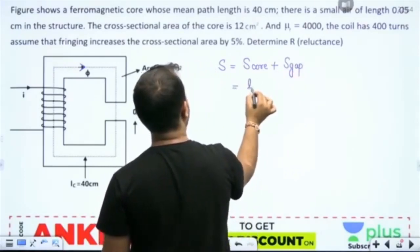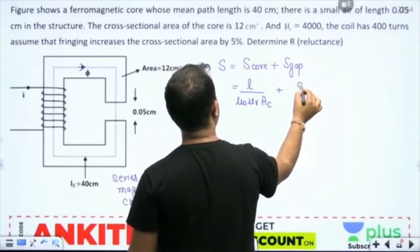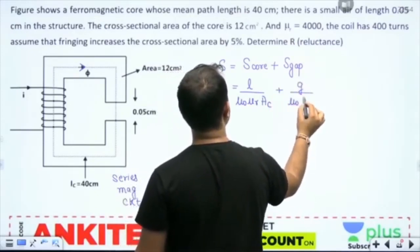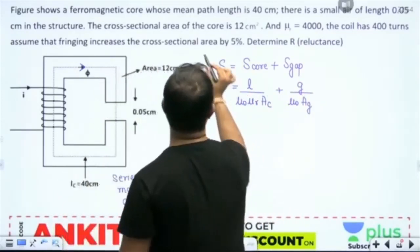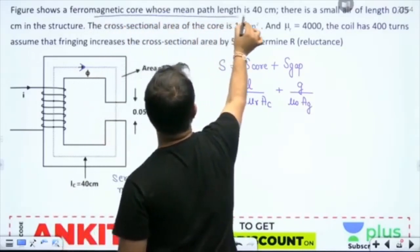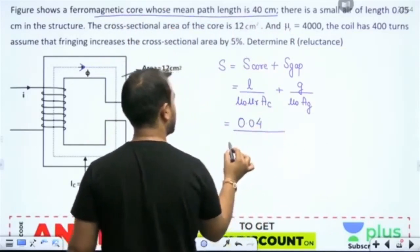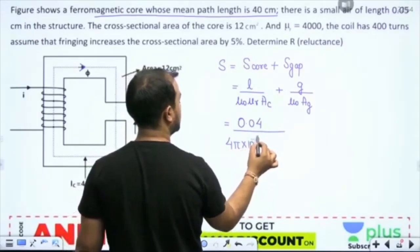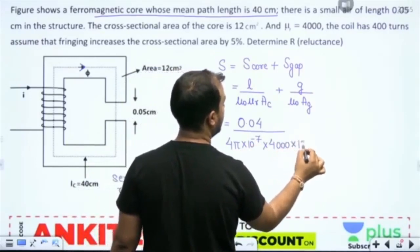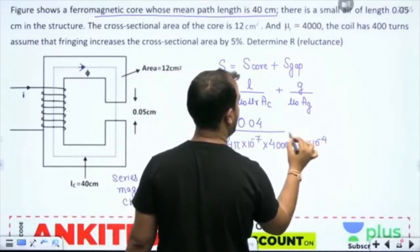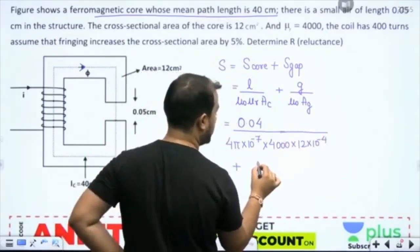What is the reluctance of core and gap? Now the length of the ferromagnetic core is 40 cm. Permeability is given as 4000 and area 12 cm square, plus the air gap is 0.05 cm.